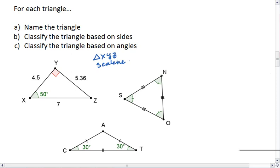And then based on angles, we see our triangle is 50 degrees, 90 degrees, and so the last angle must be 40 degrees, giving us three different angles, but one of them is a right angle, so this is a right triangle.